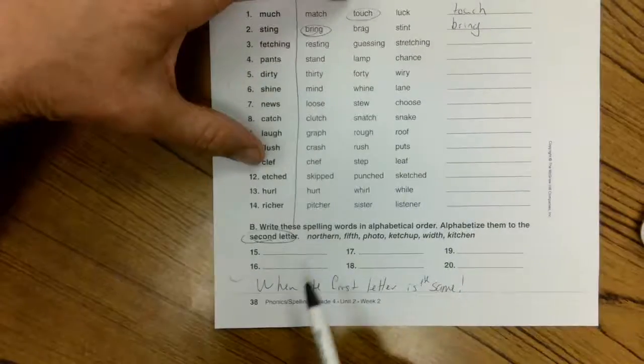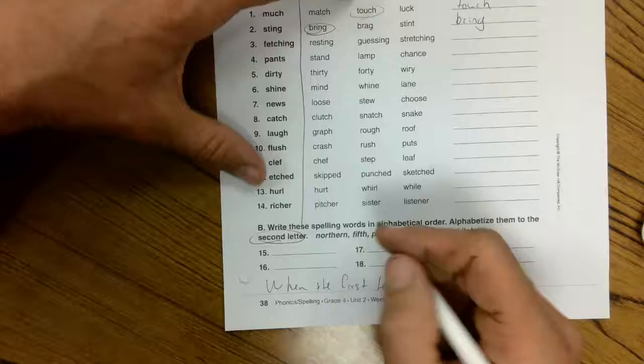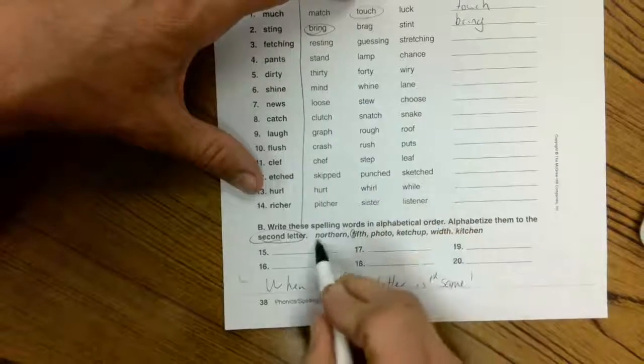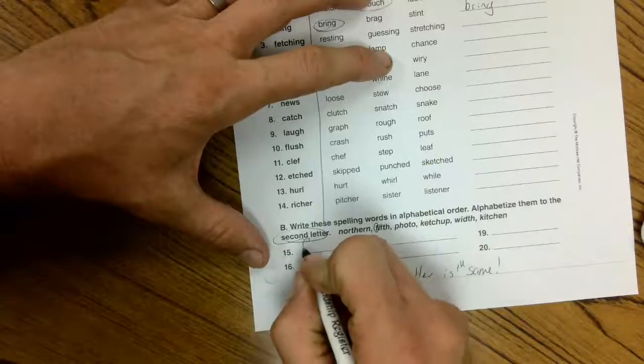So in other words, a, b, c, d, e, f. And there's f. It's the first letter. There's no other f words. So fifth is going to be 15.